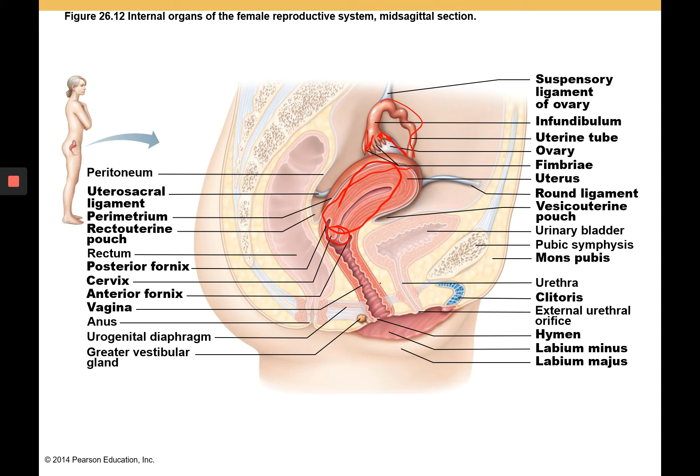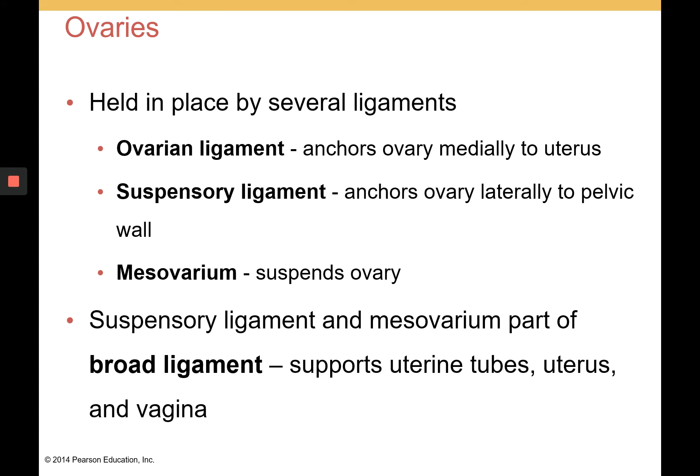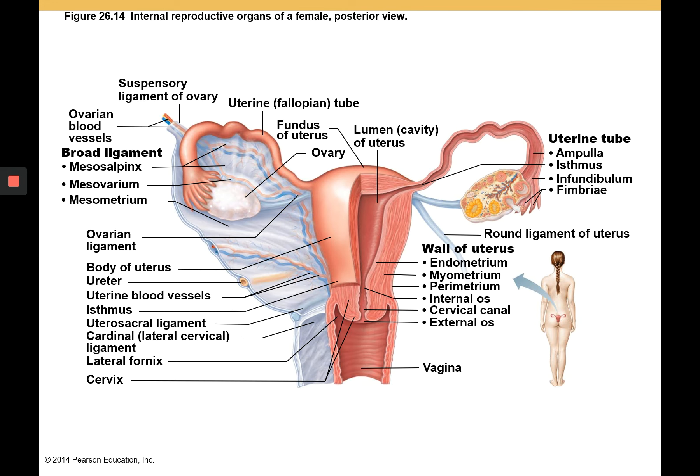The ovaries are held in place by several ligaments including the ovarian ligament, suspensory ligament, and mesovarium. These ligaments are part of a broader broad ligament, which altogether provides support for the uterine tubes, uterus, and vagina. The broad ligament contains parts of the suspensory ligament, the mesovarium, mesometrium, and other supporting structures of the internal female reproductive organs.